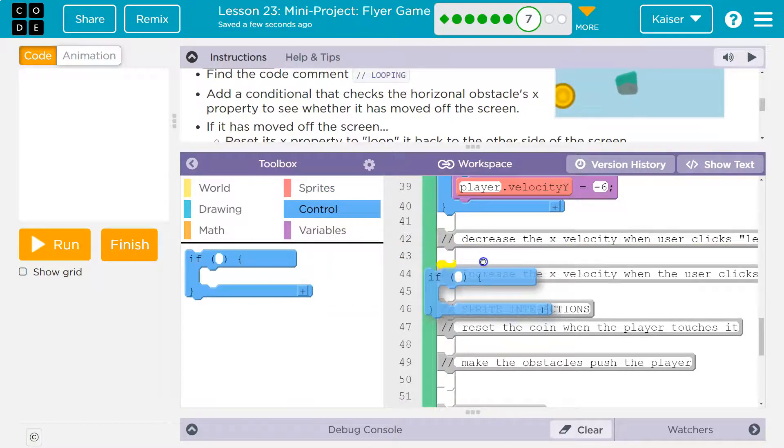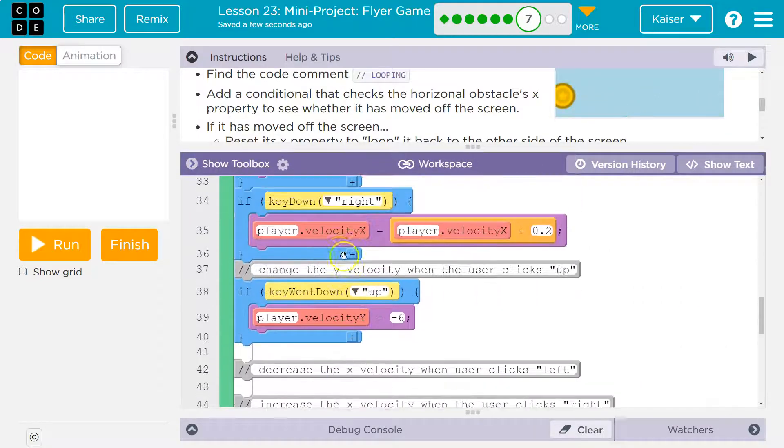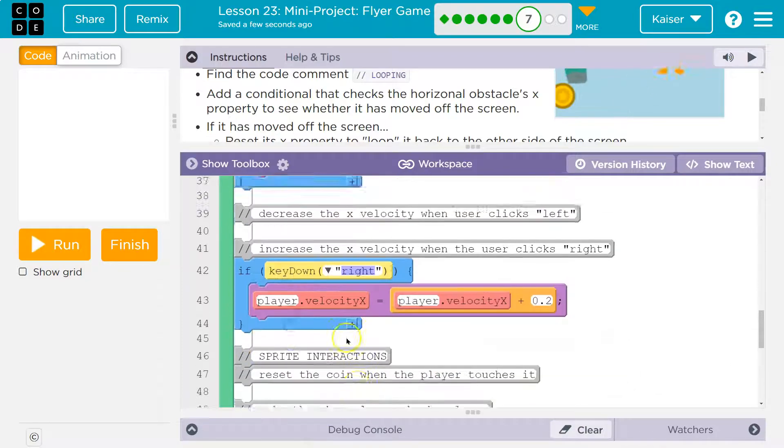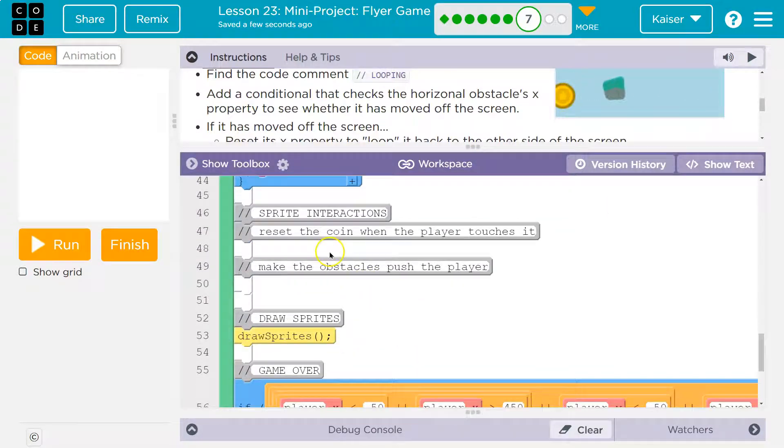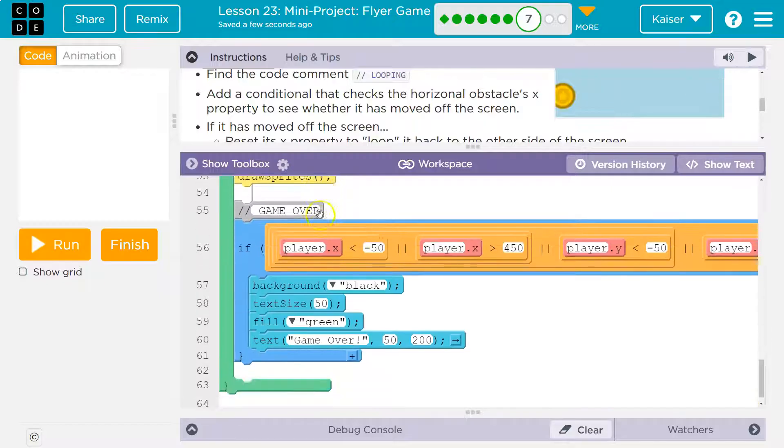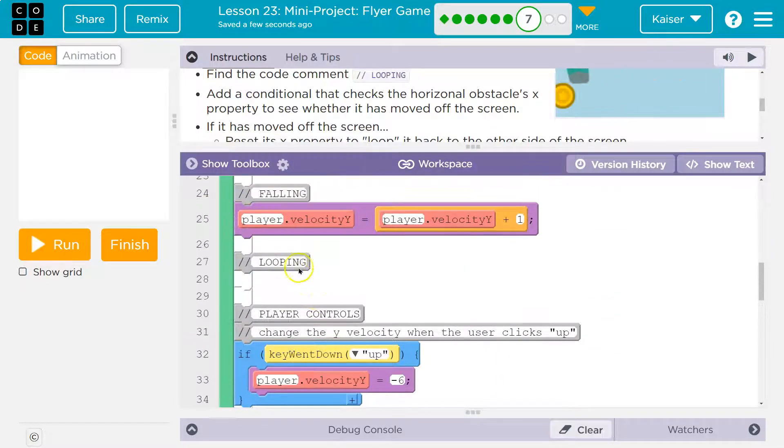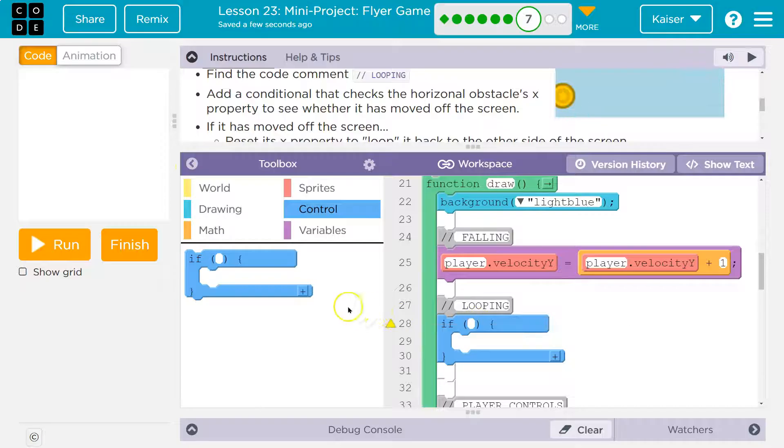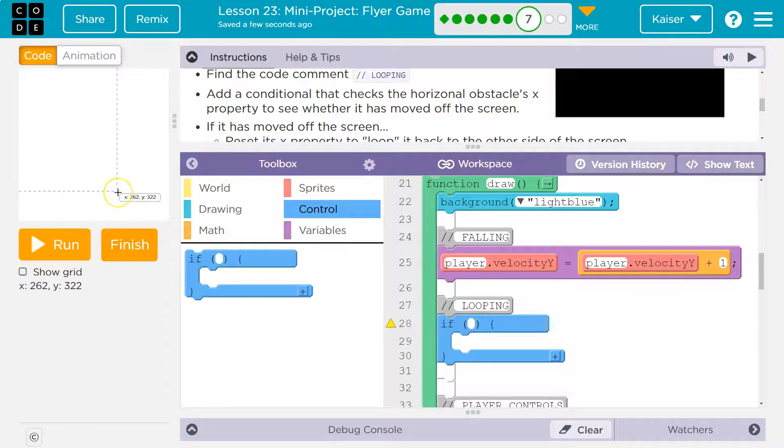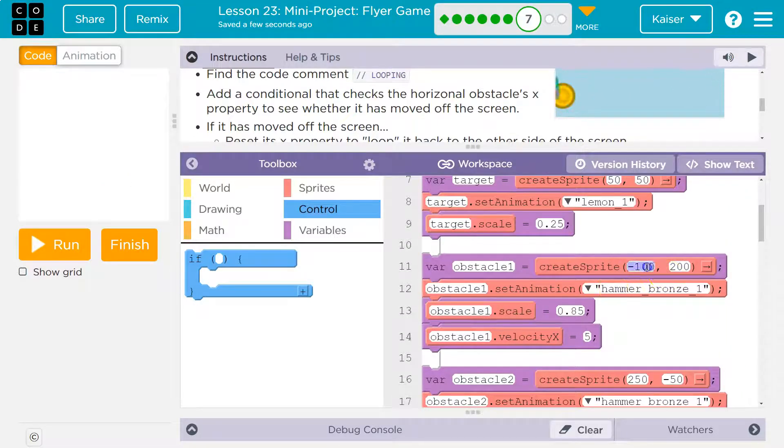Let's see, what's this? Decrease the x velocity—I can put it under the comments. That makes sense. Reset, nope. Make obstacle, nope. Draw, nope. Where's my comments? Looping. Okay, so when it's off the screen. If what? Well, I have an obstacle one, so if obstacle one—how do I know if it's off the screen?